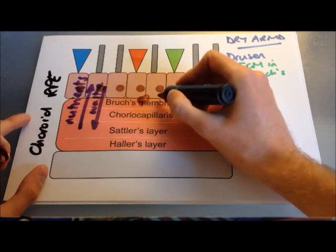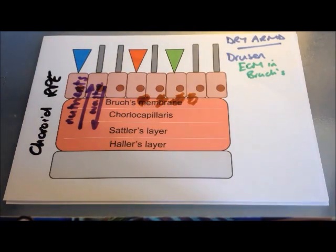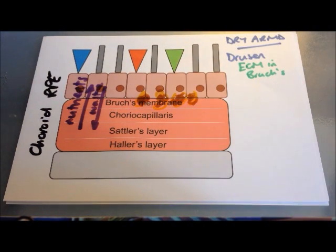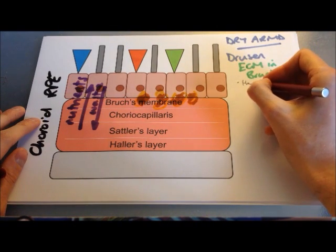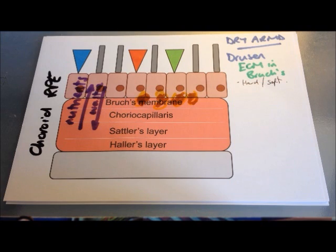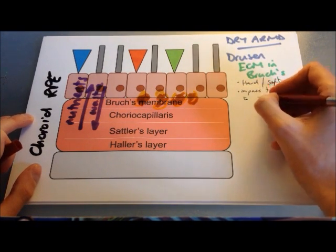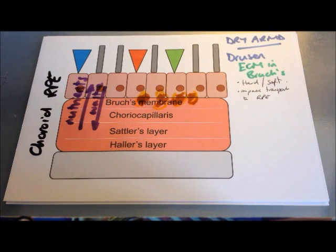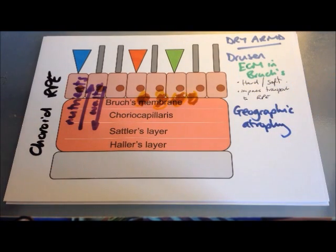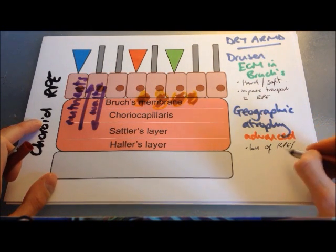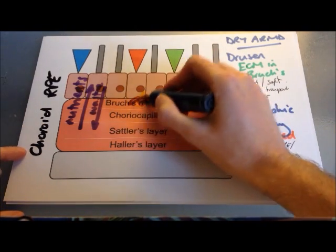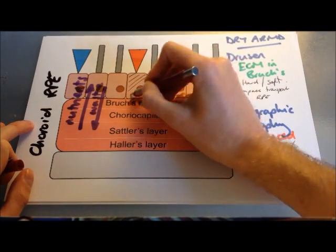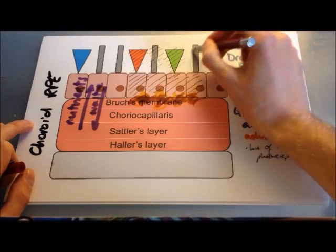With age, you get deposition of extracellular matrix deposits within Bruch's membrane, which impedes the ability of nutrients to reach the retinal pigment epithelium and photoreceptors, and impedes waste removal. The key finding in dry macular degeneration is drusen — a build-up of extracellular matrix and inflammatory deposits within Bruch's membrane. Drusen can be classified into hard or soft. Hard drusen are small and well-demarcated and normal with age, whereas soft drusen are larger, look like cotton balls, and are always pathological.